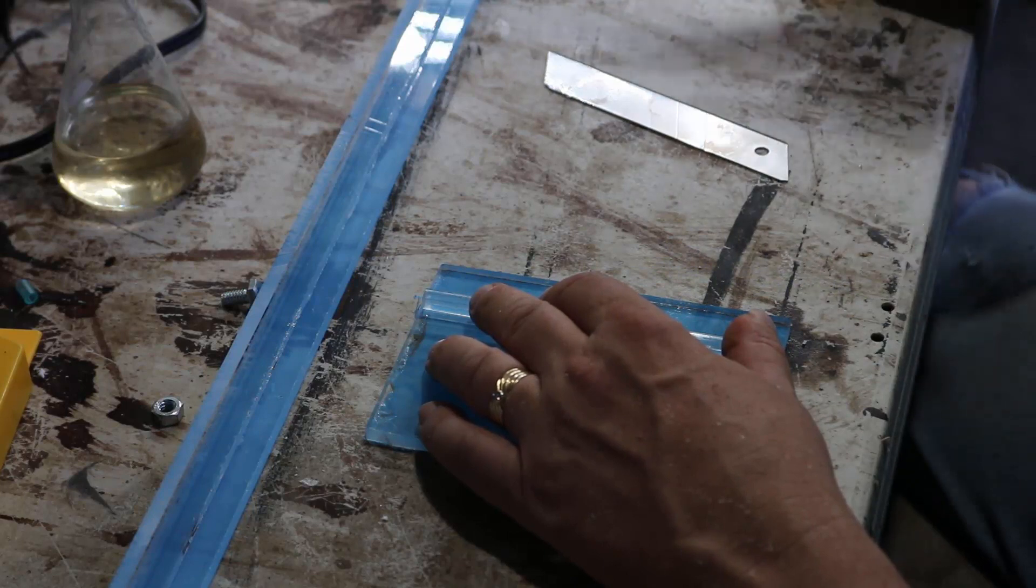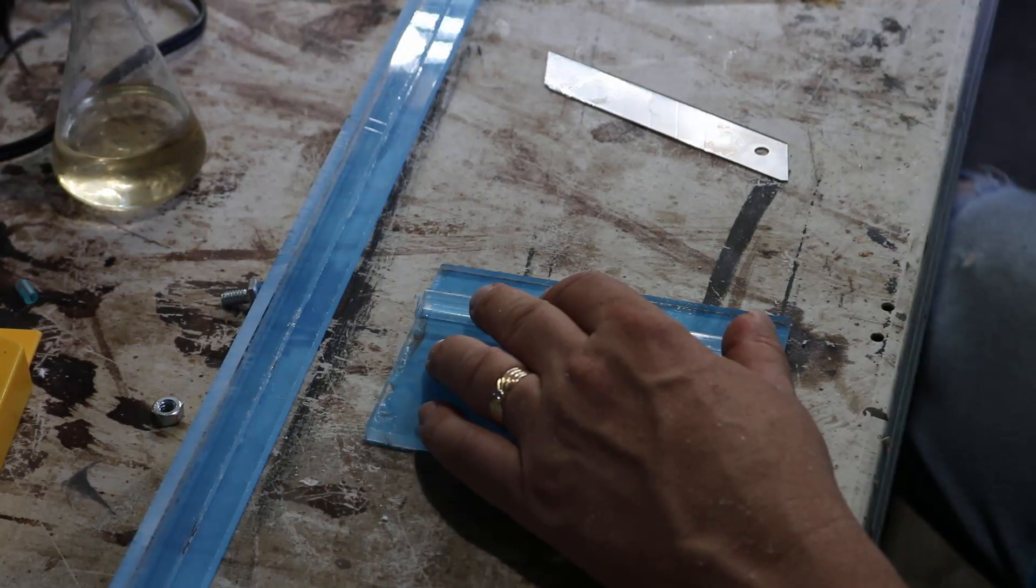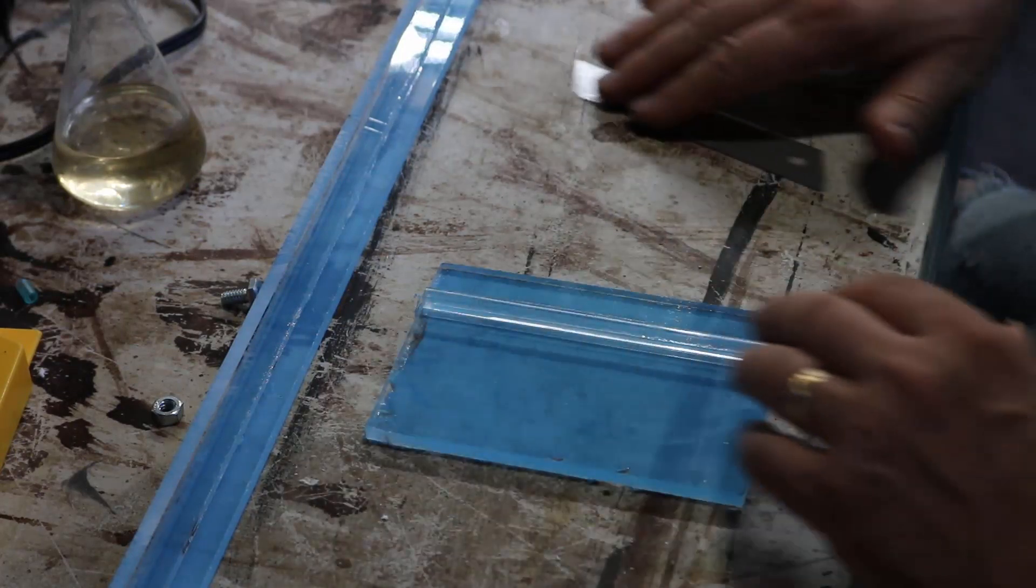I just glue this on—it's a piece of quarter inch square tube, extruded tube acrylic. I could have cut a small piece of quarter inch, but I have this lying around so I use that.